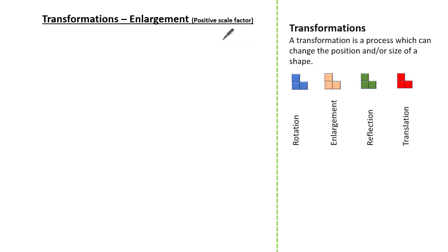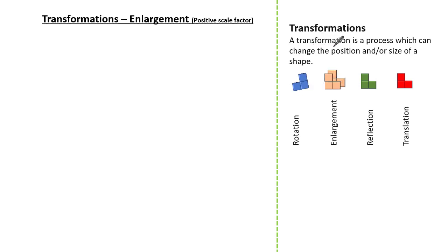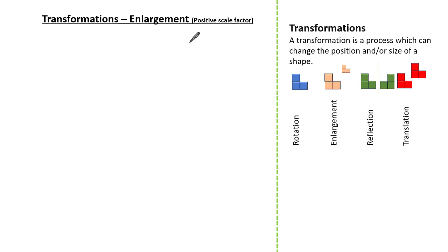Hello everyone and welcome to this tutorial on enlargement with a positive scale factor. Remember in mathematics there are four transformations, and a transformation is a process which can change the position and/or size of a shape. We have four transformations: rotation, enlargement — remember not to be fooled by the word 'large', it can sometimes make the shape smaller — reflection, and translation. In today's lesson we'll be focusing on enlargement with a positive scale factor.